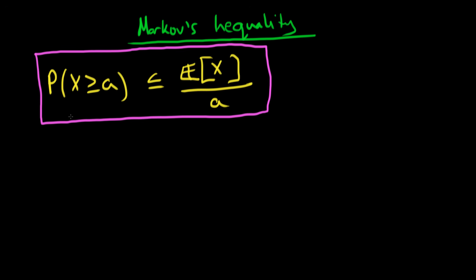So what does Markov's inequality actually mean? Stated mathematically, it means that the probability that some random variable x is greater than or equal to some constant a, is less than or equal to the expected value of x divided by a, the constant.